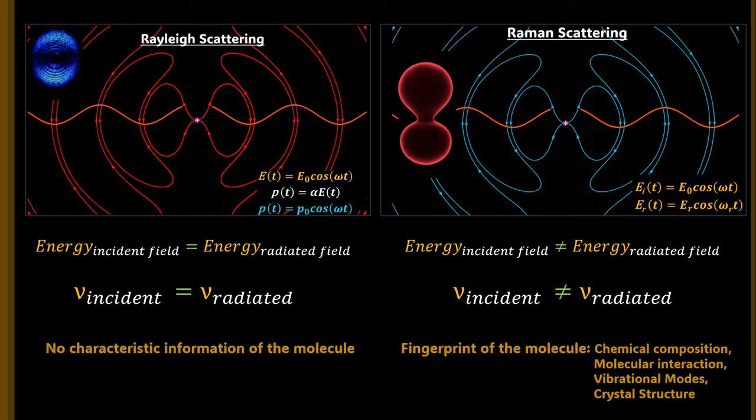Raman scattering is a very weak process — only 1 in 10 million, that is 0.00001 percent of the incident light, exhibits Raman scattering. However, being so weak in nature, it still provides significant information about the molecules it interacts with. Because of this versatile nature, it earned a Nobel Prize in 1930 for its discoverer, Sir Chandrasekhara Venkata Raman. Thank you for watching and stay tuned for further videos.